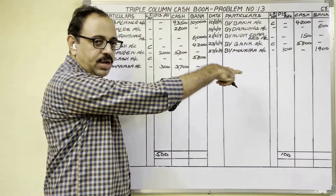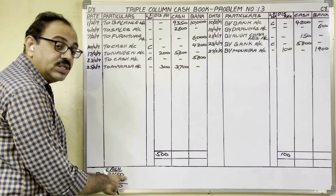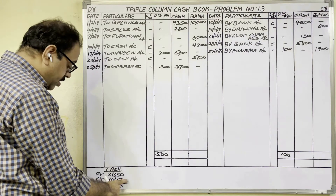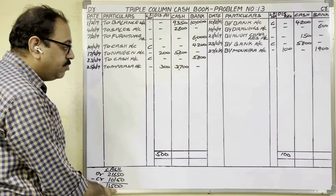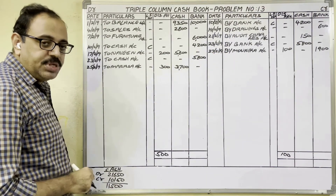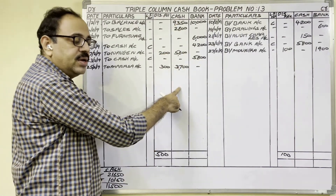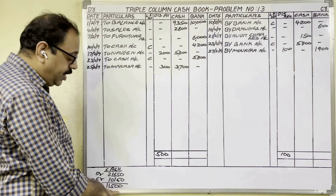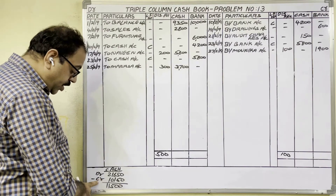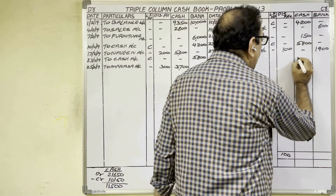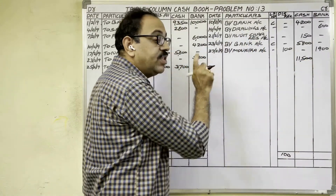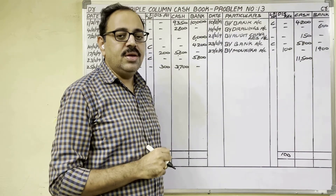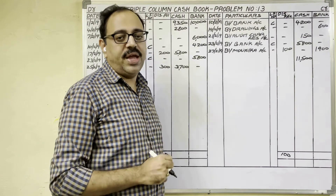For cash column: debit total is 21,650 and credit total is 10,150, so the difference (balance) is 11,500. Receipts should be more than payments, so our answer is correct. The cash balance of 11,500 is written on the credit side where the total is less — write 'By Balance c/d' on the last date of the month. February's last date depends on whether 2019 is a leap year or ordinary year.